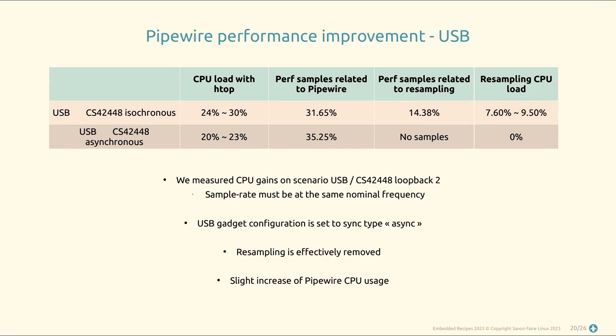We evaluated this solution with PipeWire using the same loopback between USB and the codec board, both with isochronous transfers (no feedback endpoint) and with asynchronous transfers with a feedback endpoint. The result: it works, there's no resampling needed because we use the very same audio sample rate, and it's easy to set up. The only constraint is that the nominal sample rate must match on both sides. We see only a very slight increase in PipeWire CPU usage for computing and feeding the feedback endpoint.